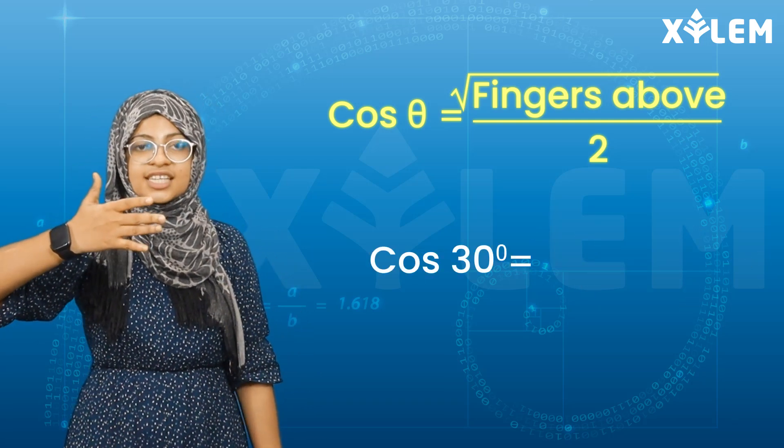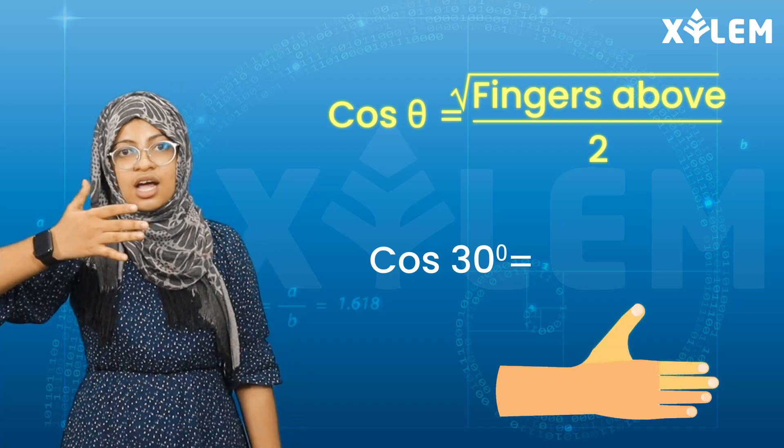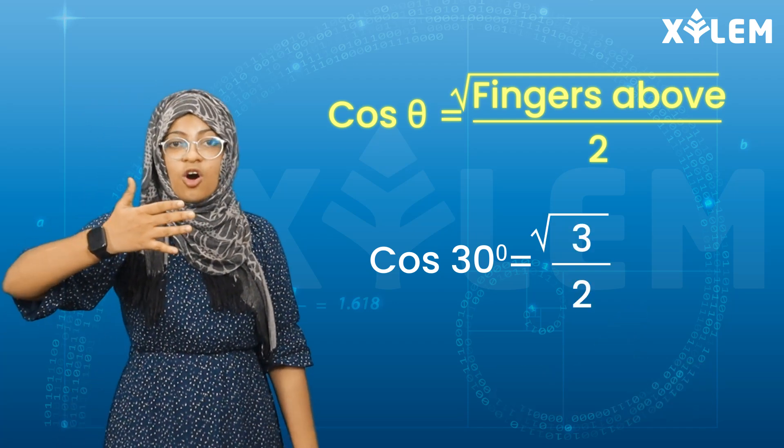Now for 30 degrees. Cos 30°. If you hold 30 degrees, there are 1, 2, 3 fingers above. Then root of 3 by 2. That's the cos 30° value.